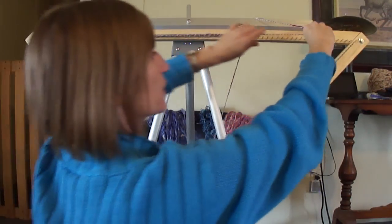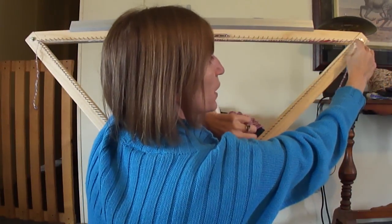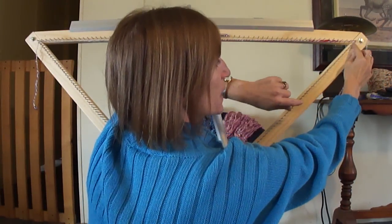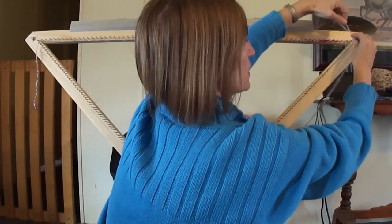So we're going to take this and we are going to go all the way across, hook it on the far right corner, bring it down to the next loop, or down to the next peg, and run it back across.